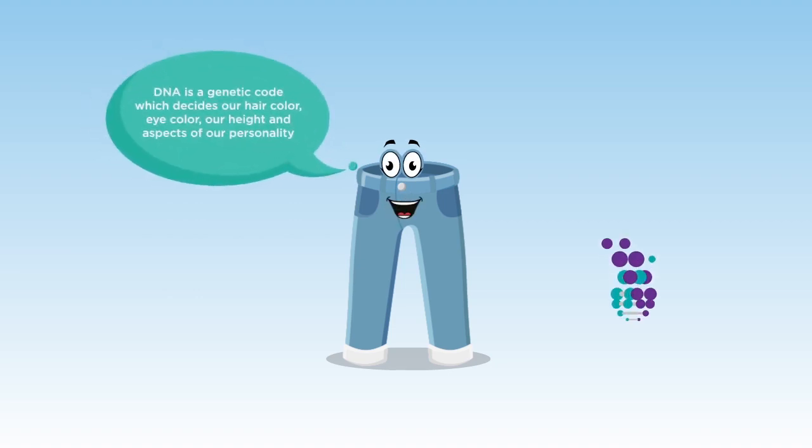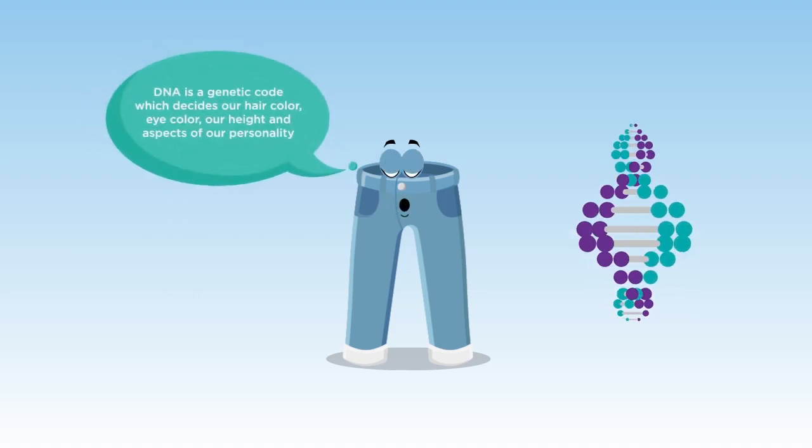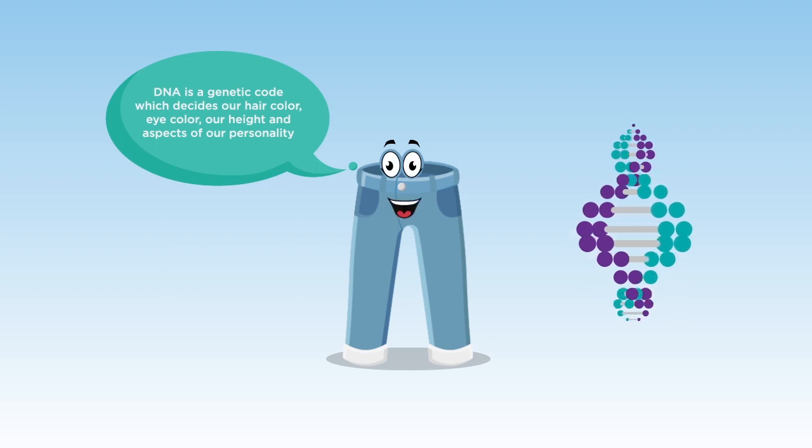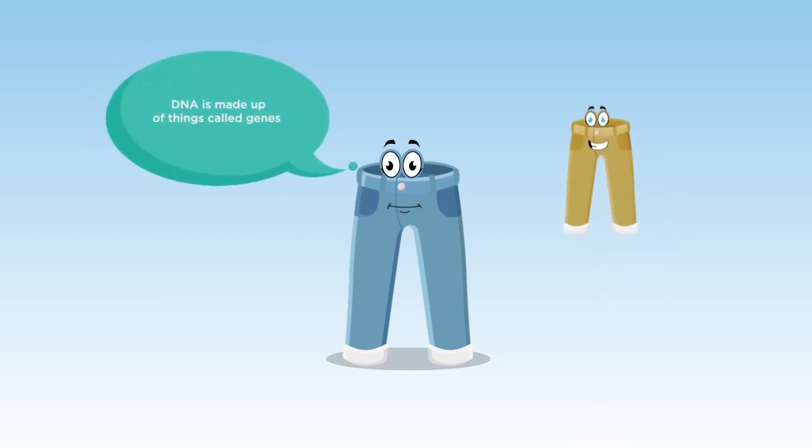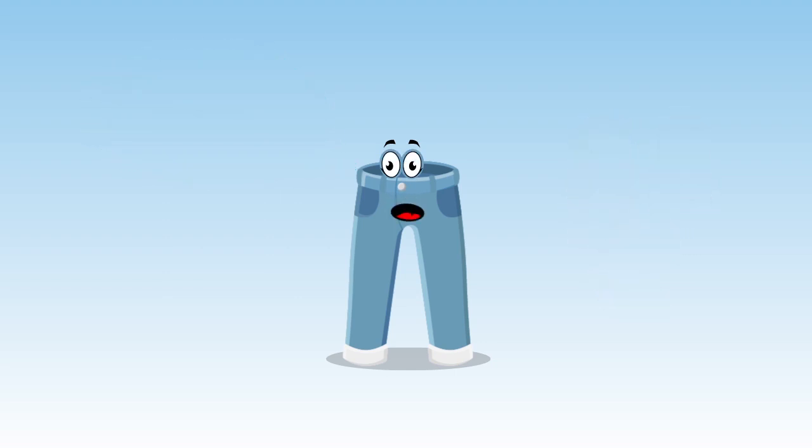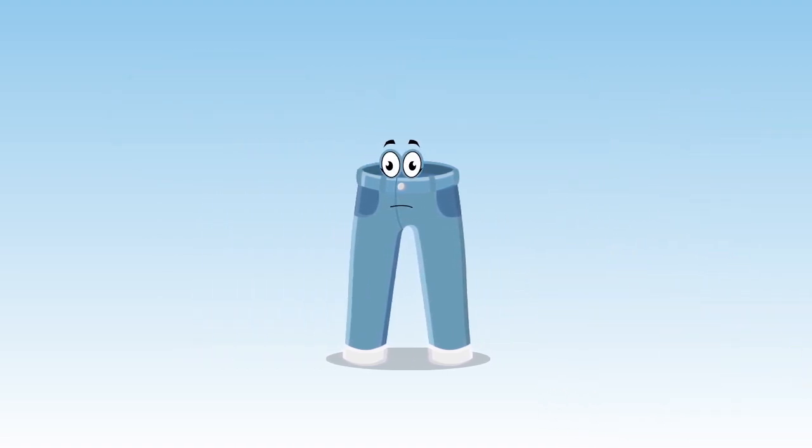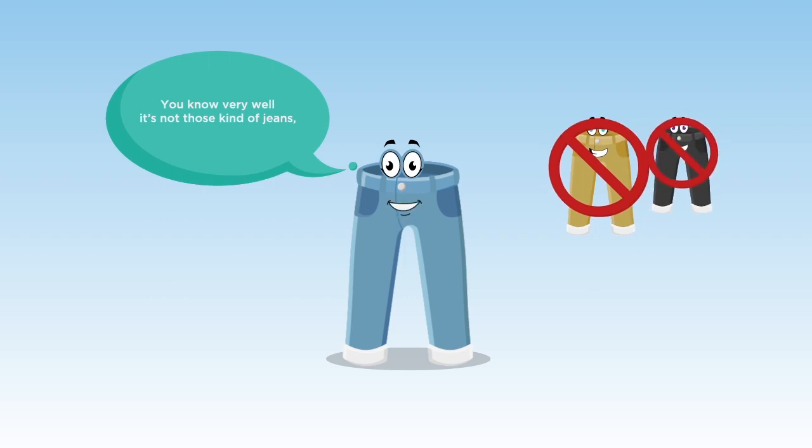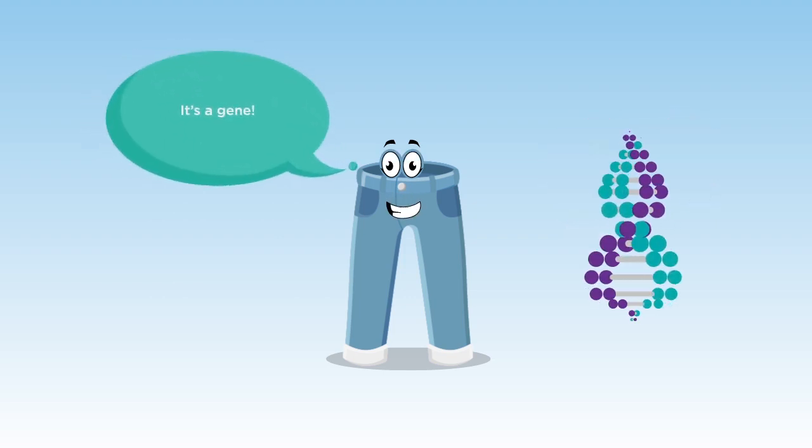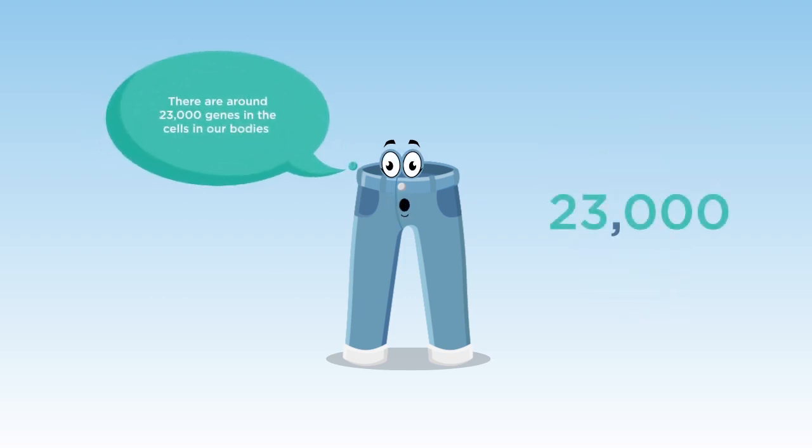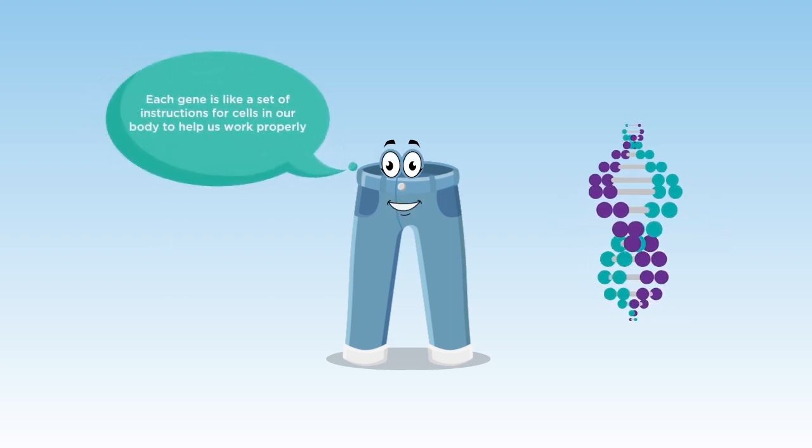Yes, DNA is a genetic code which decides things like our hair color, height, and aspects of our personality. DNA is made up of things called genes. Oh, that's real funny. You should be a comedian. Thanks. You know very well it's not those kind of genes. There are around 23,000 genes in the cells in our bodies. Each gene is like a set of instructions for cells in our body to help it work properly.